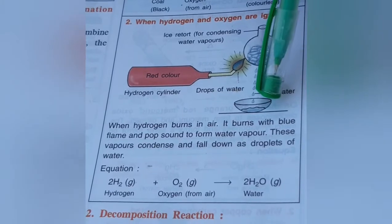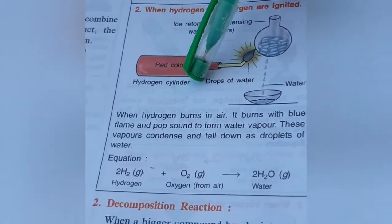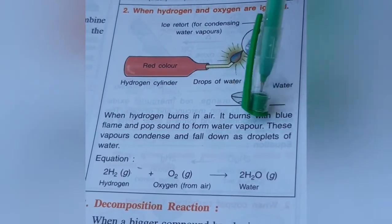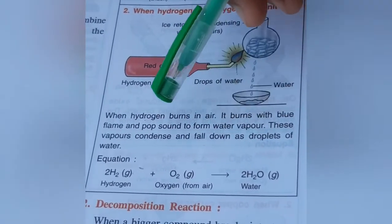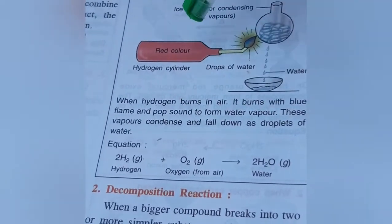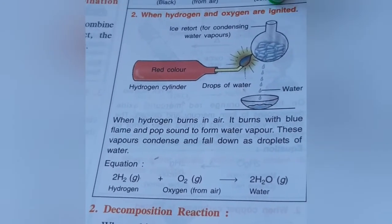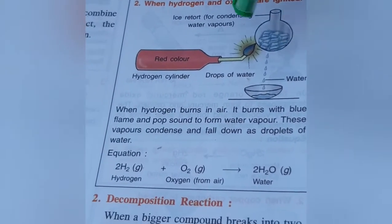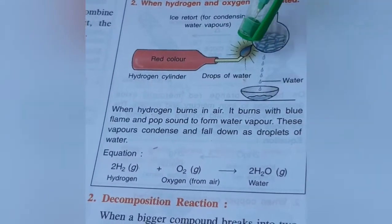When hydrogen burns in air, it burns with a blue flame and pop sound to form water vapors. These water vapors condense and fall as droplets of water.